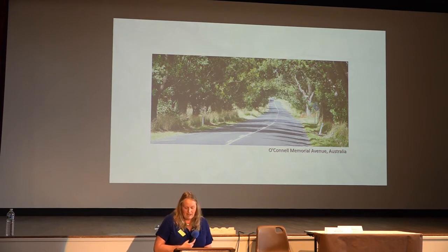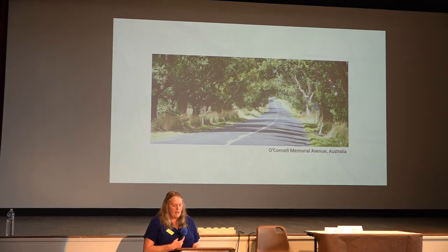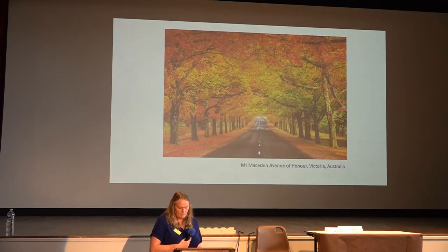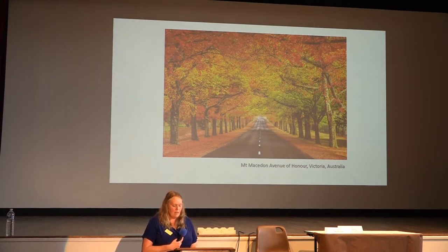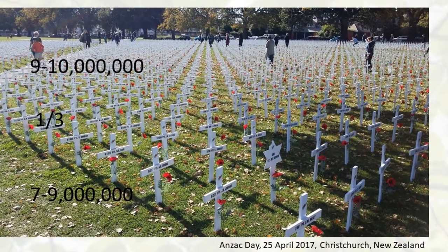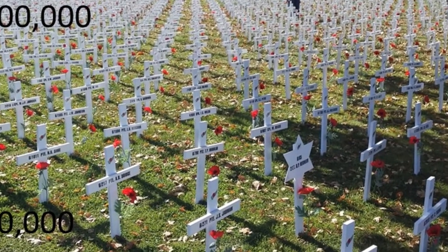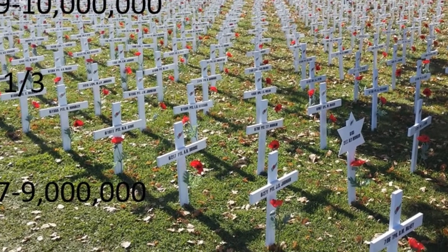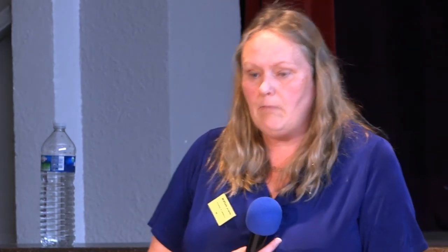The memorial avenue in all its variation was the antithesis of war — juxtaposing beauty and life with death and sorrow. Within communities that planted memorial avenues there were competing public and private needs and requirements. With an estimated 9 to 10 million soldiers killed on all sides of the war, and one third of these men being married, there would have been millions of families directly affected — a very conservative estimate of 7 to 9 million families. In Australia it was established that every Australian citizen was related to or knew someone who died; in New Zealand, this was every family.